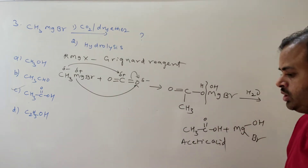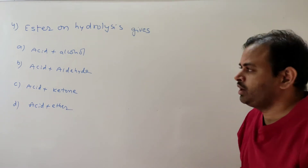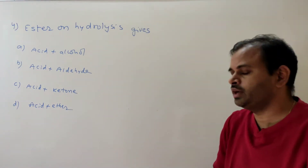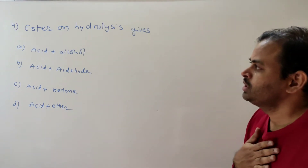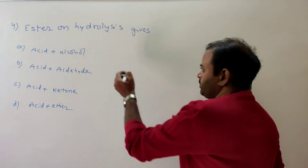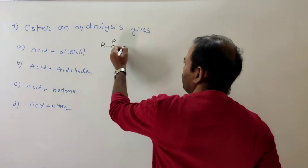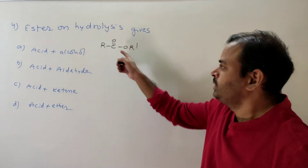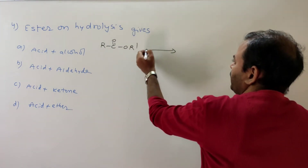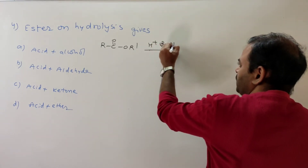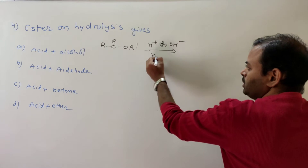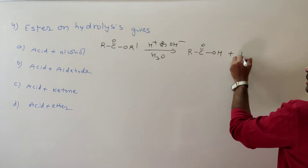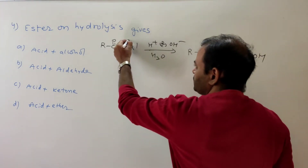Fourth question: ester hydrolysis gives what? The options are acid plus alcohol, acid plus aldehyde, acid plus ketone, or acid plus ether. An ester is RCOOR'. Under H+ or OH− conditions, hydrolysis takes place, giving RCOOH and R'OH.